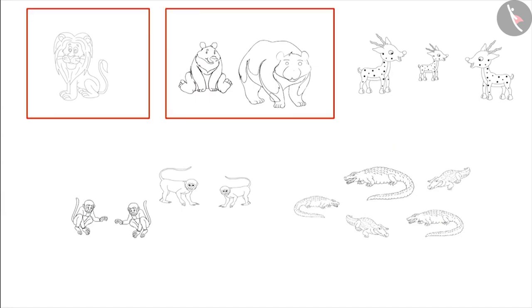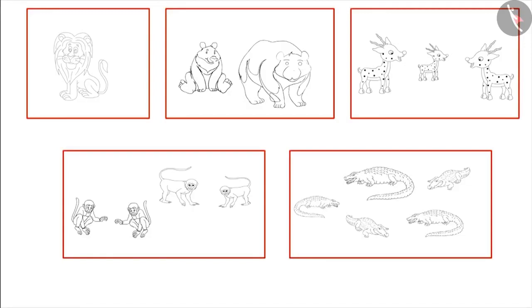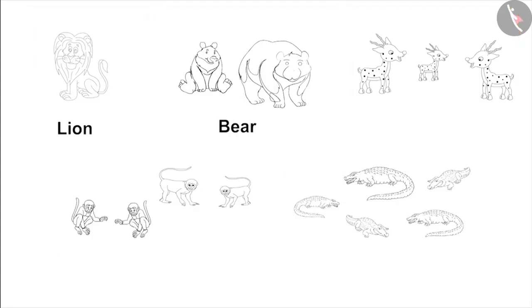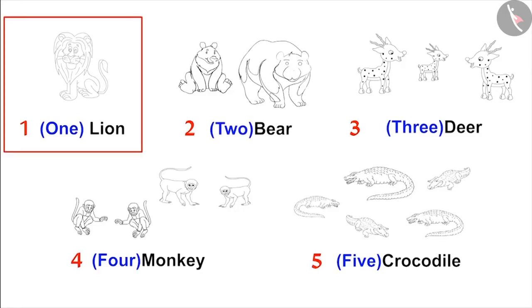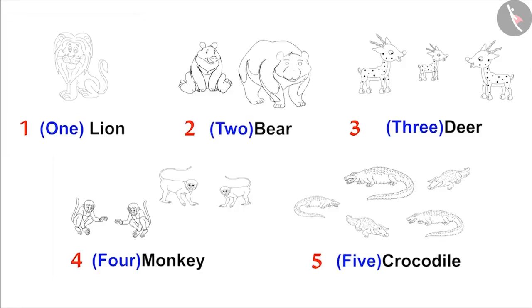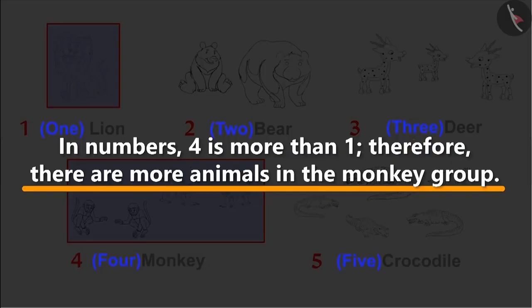Okay, Mom. But what should I name? My dear, the name of each group should be the name of the animals shown in it. Now below each group, write the number of animals in that group. Now can you tell me if there are more animals in the lion group or in the monkey group? There is one animal in the lion group and there are four animals in the monkey group. Amongst the numbers, four is more than one. Therefore, there are more animals in the monkey group.